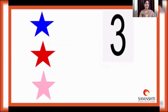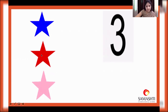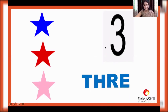Now how many stars can you see here? Let's count. One, two, three. Three stars. And can you help me name the colors of these stars? Let's do it. Blue, red, pink. So, three stars. Three. T-H-R-E-E.